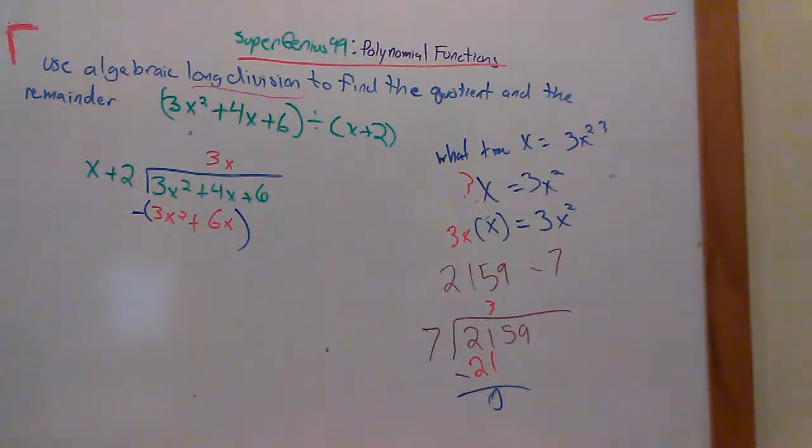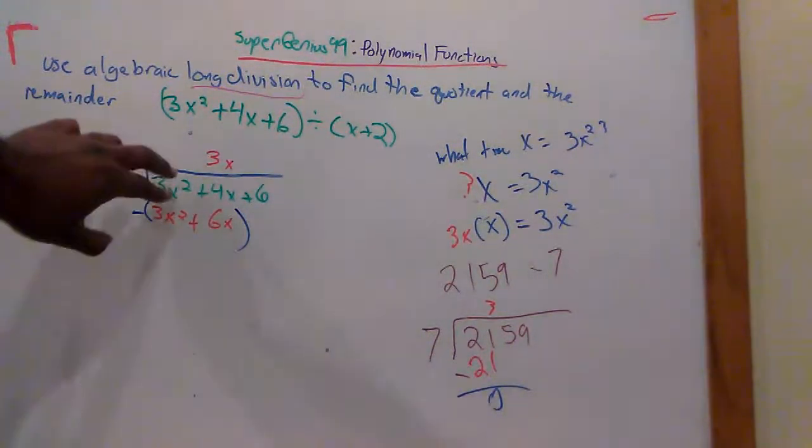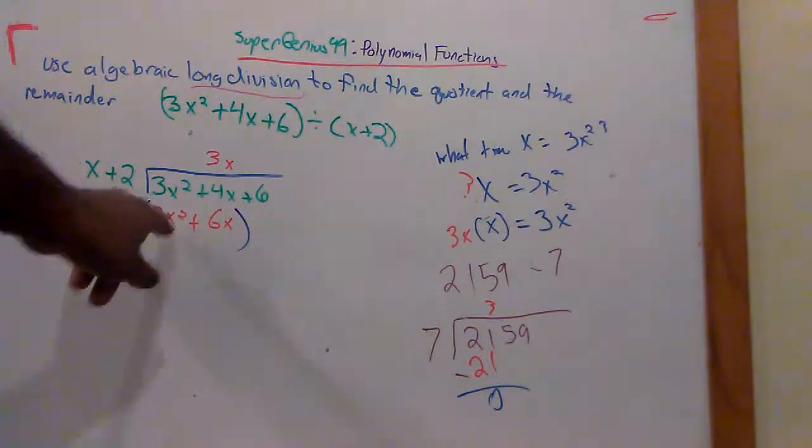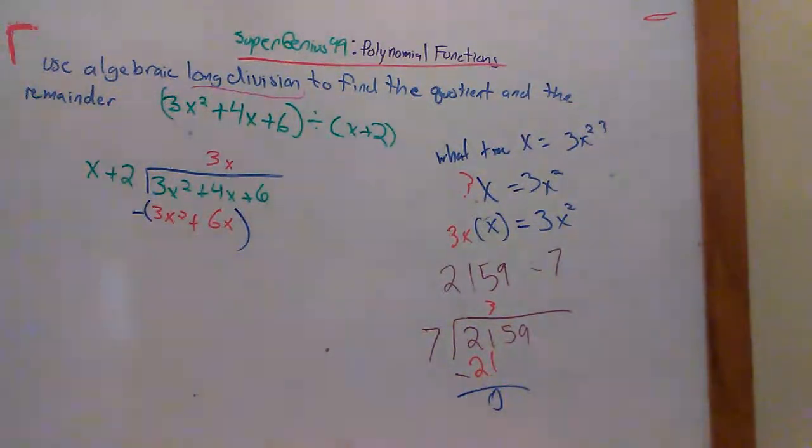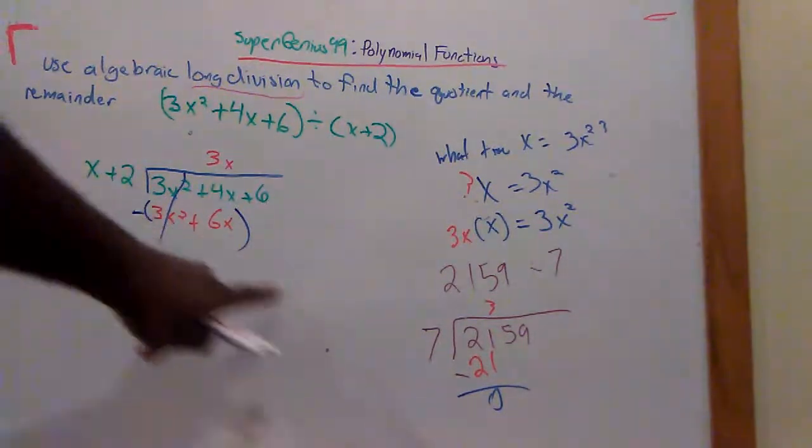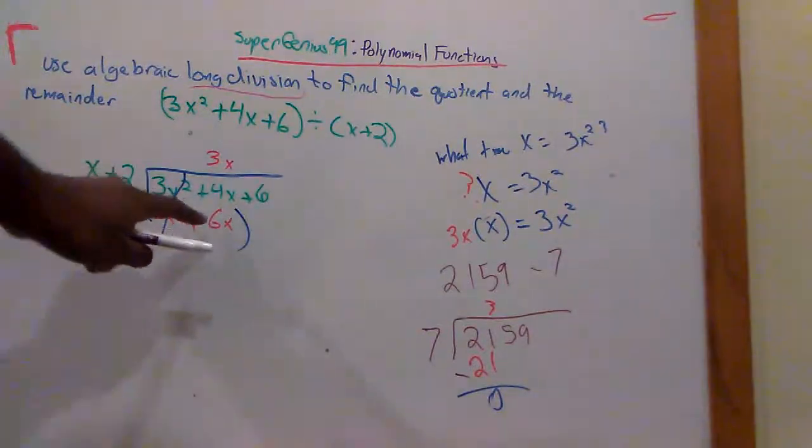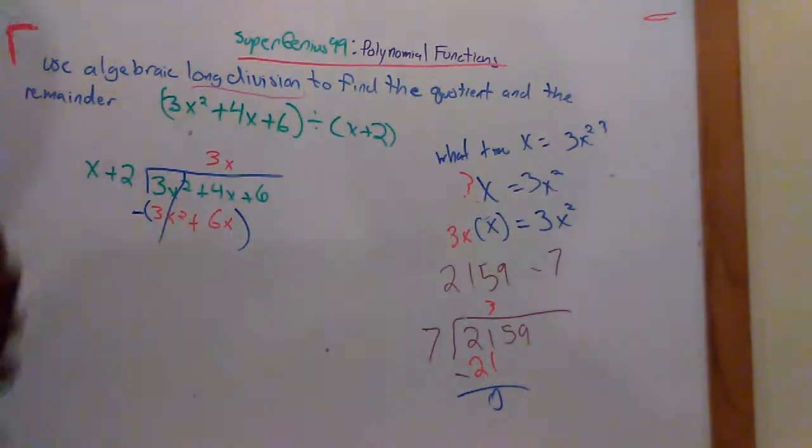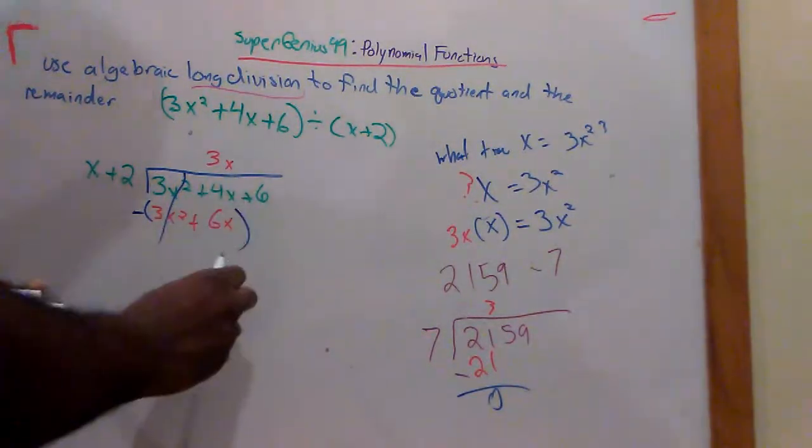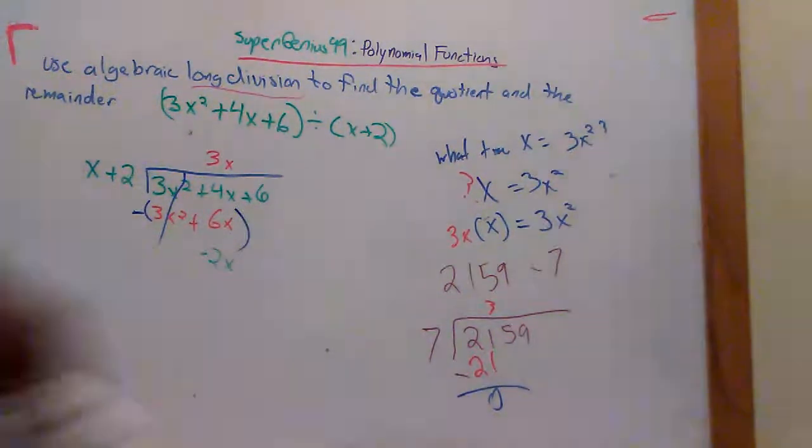And then you kept doing it. So just like we subtracted right here, we're going to subtract here. Now, remember when you're subtracting, you've got to distribute this negative. So this is 3x squared minus 3x squared. That goes away. This is 4x minus 6x. 4 is plus 6x. Remember, we're not adding. We're subtracting. 4x minus 6x. So what's 4x minus 6x? 4 minus 6 is negative 2x.